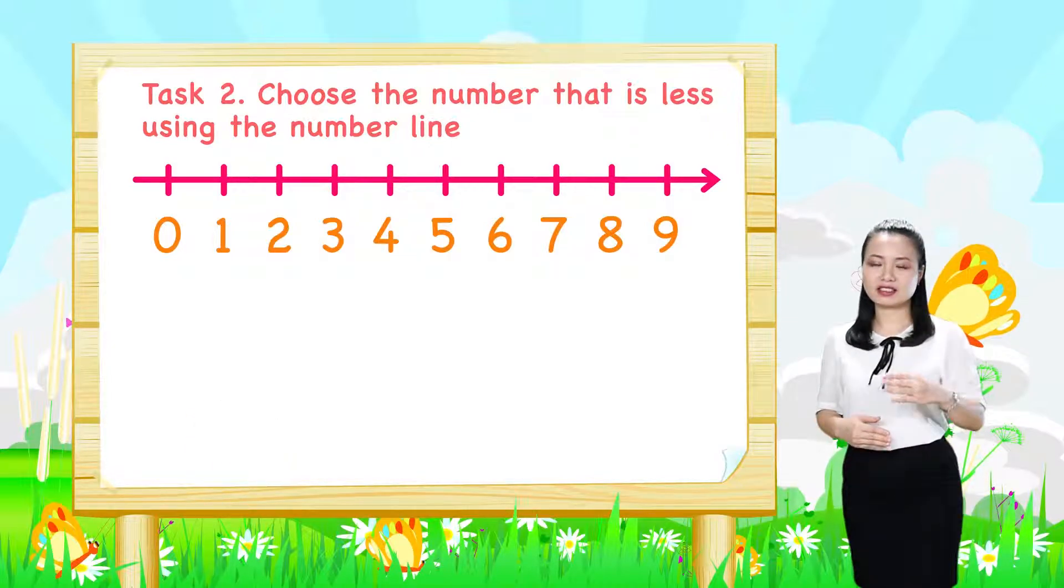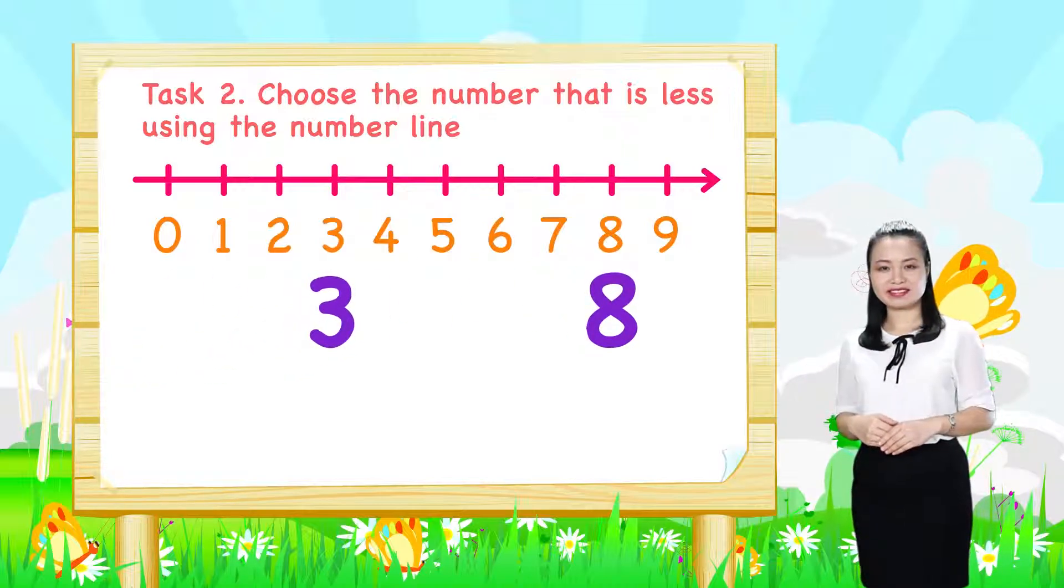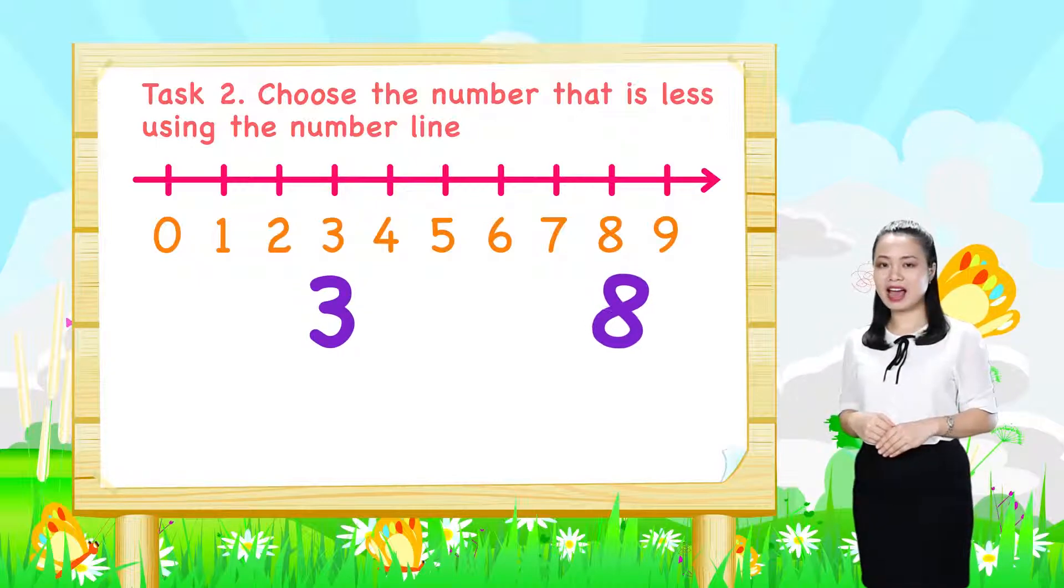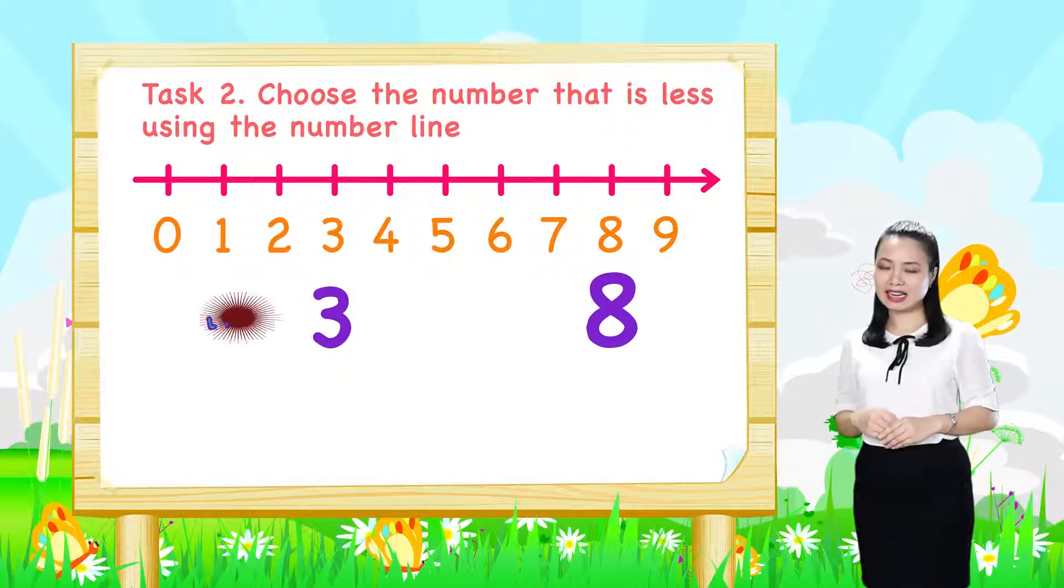First, for the pair 8 and 3, number 3 is to the left of number 8. Therefore, 3 is less.